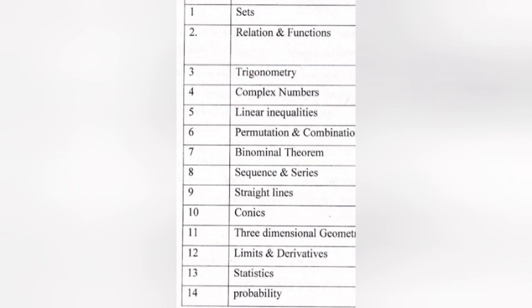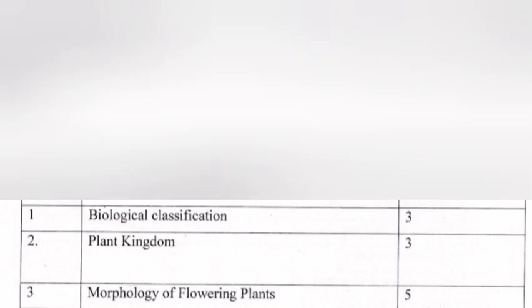Trigonometry, Binomial Theorem, and Three-Dimensional Geometry carry four marks each. Sets, Complex Numbers, and Linear Inequalities carry three marks each. Botany: Chapter one - Biological Classification, three marks. Chapter two - Plant Kingdom, three marks. Chapter three - Morphology of Flowering Plants, five marks.